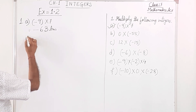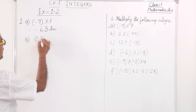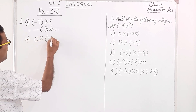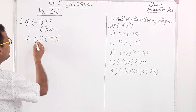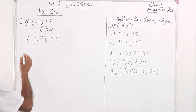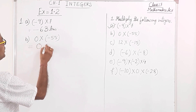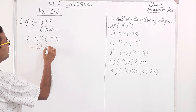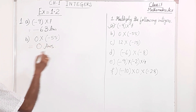Number b: 0 into minus 55. When you multiply anything with 0, it will always be 0 only. So the answer is 0.